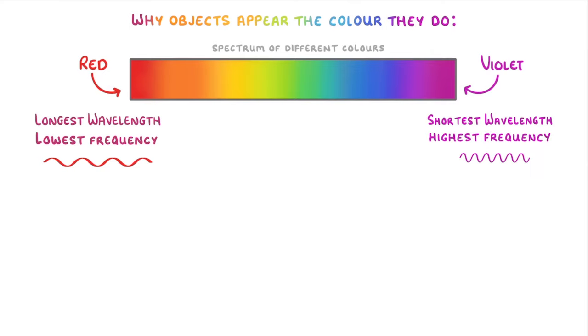And to help you remember the order of these colours, you can use the acronym ROYGBIV, where each letter stands for a colour.